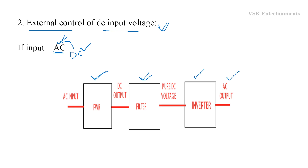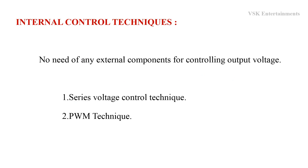In this method, we first apply the AC input voltage to the full wave rectifier, which is a circuit that converts AC input to DC output. The output of the full wave rectifier contains harmonics, so to get pure DC we apply this output to a filter. The filter is a circuit which removes the harmonics. The output of the filter circuit is then applied to the inverter as input, giving us the controlled output voltage.